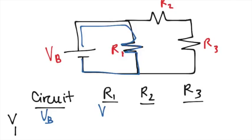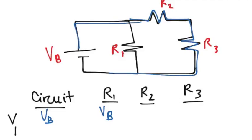But when we look at R2 and R3, they're in series with one another, which means that the voltage across both of them is equal to VB because that's part of this full loop. But the voltage across just one of them is not equal to VB. It's less than that.